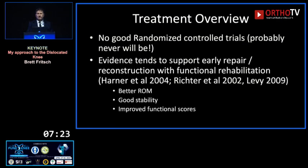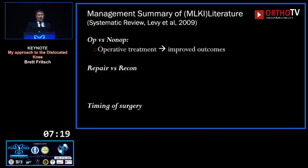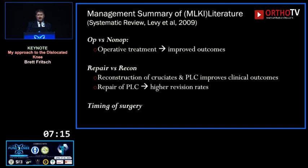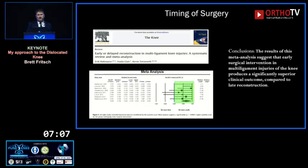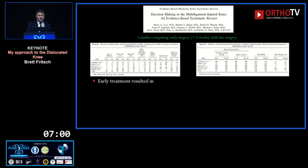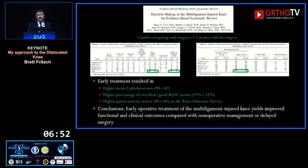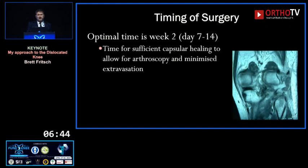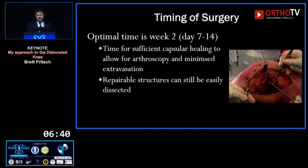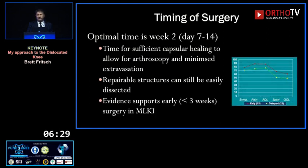There's no good randomised controlled trial and there probably never will be. Evidence supports early repair and reconstruction combined with functional rehab. Operative treatment tends to do better than non-operative; reconstructions tend to do better than isolated repairs; and early surgery does better than late. A meta-analysis by Kevin Tetsworth confirms early surgery gives better clinical outcomes. Bruce Levy's group showed early treatment resulted in higher Lysholm scores, higher percentage of good-to-excellent IKDC scores, and higher return to activity — with around three weeks considered the early cutoff.